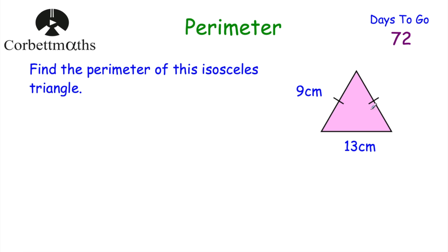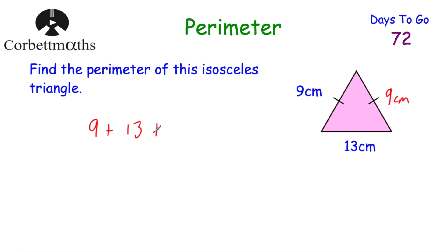Find the perimeter of this isosceles triangle — press pause and try it. With an isosceles triangle, two sides have the same length. The little dashes on the left and right sides tell us both are 9 cm. So we do 9 + 13 + 9: 9 + 13 is 22, plus 9 is 31. The perimeter of this triangle is 31 centimetres.